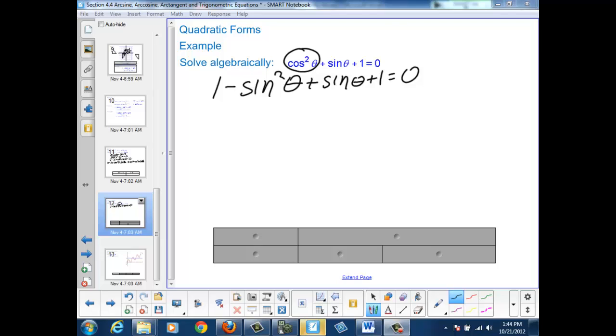Now I'm going to simplify, and I'll get negative sine squared theta plus sine theta plus 2 equals 0.